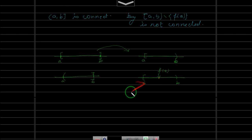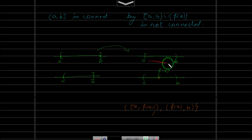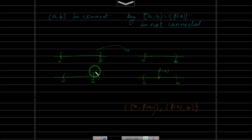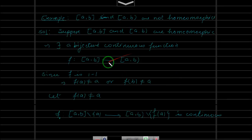We can prove this in two ways: using the definition, we can show that [a, f(a)) and (f(a), b) form a separation of [a,b) \ {f(a)}. Alternatively, the continuous image of a connected set is connected, and since f is bijective, removing a point from the domain forces removing its image from the codomain, yielding a disconnected set — a contradiction.